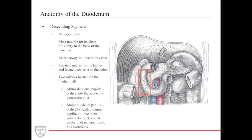The descending duodenum has two orifices on its medial wall: the minor duodenal papilla and the major duodenal papilla. The minor papilla is the orifice for the accessory pancreatic duct, while the major duodenal papilla — located below the minor — is the site of the main pancreatic duct and the majority of pancreatic and biliary secretions.